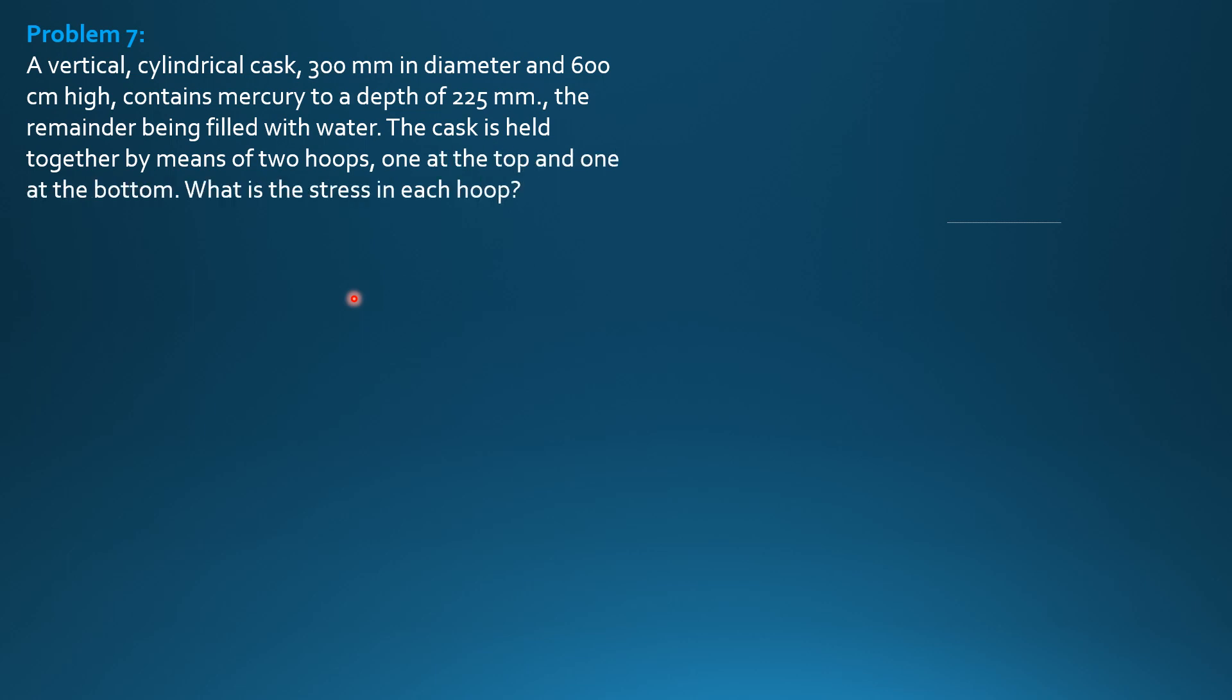The cask is held together by means of two hoops, one at the top and one at the bottom. So what is the stress in each hoop?